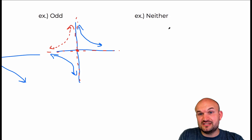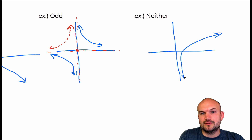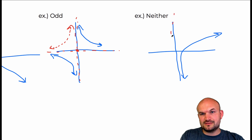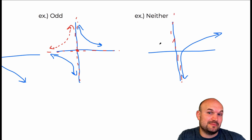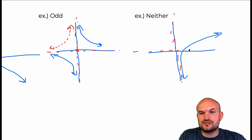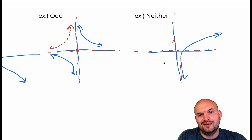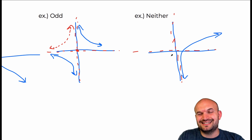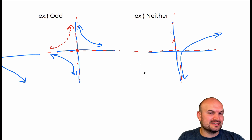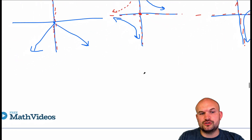For a neither function, it's just not going to have any symmetry about the y-axis or about the x-axis. We could look at the logarithmic function — something like that. You can see there is no symmetry about the y-axis; whatever's on the right side is not the same as the left side, nor is it symmetrical about the x-axis. So that is an example of something that has no symmetry at all.